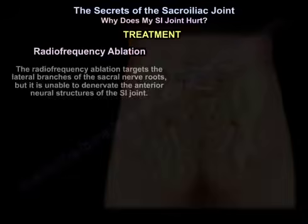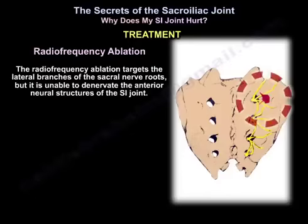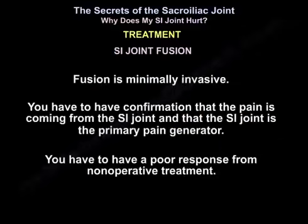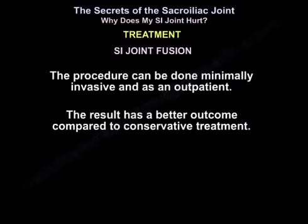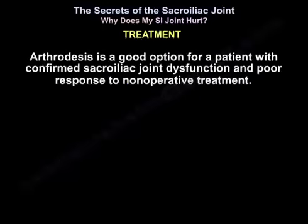Radiofrequency ablation targets the lateral branches of the sacral nerve roots, but it is unable to denervate the anterior neural structures of the sacroiliac joint. Fusion is minimally invasive and requires confirmation that the sacroiliac joint is the primary pain generator and poor response to non-operative treatment. The procedure can be done minimally invasively as an outpatient, with better outcomes compared to conservative treatment. Arthrodesis is a good option for patients with confirmed sacroiliac joint dysfunction and poor response to non-operative treatment.